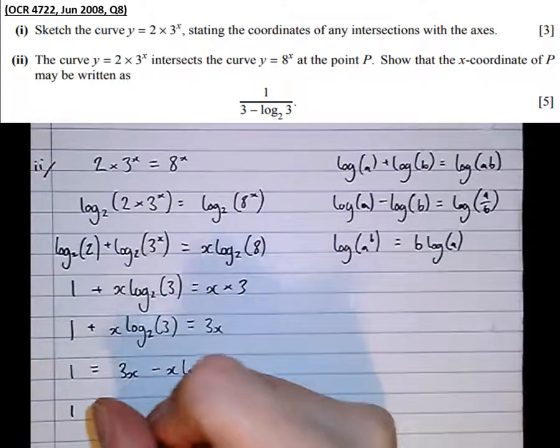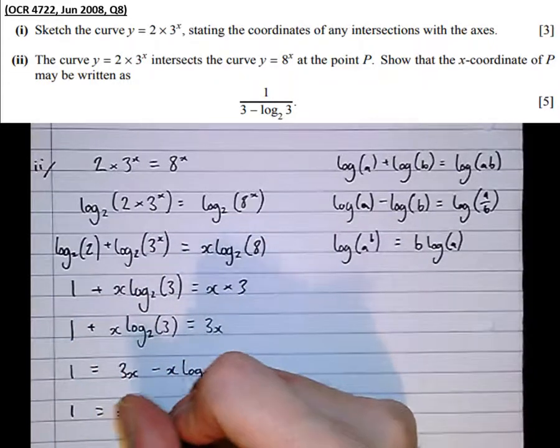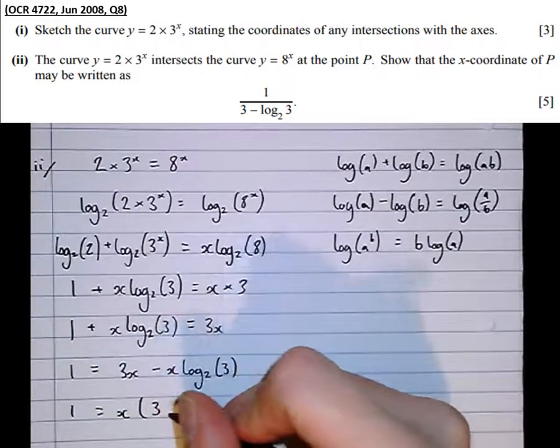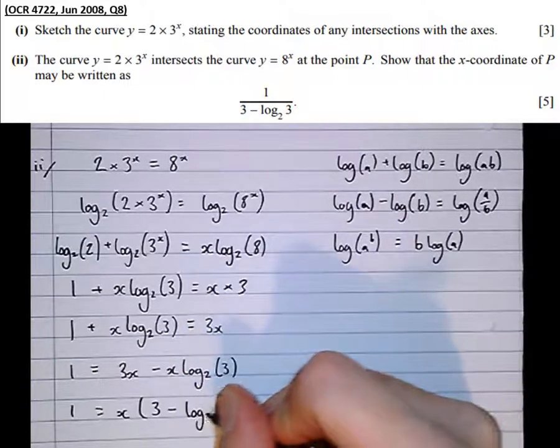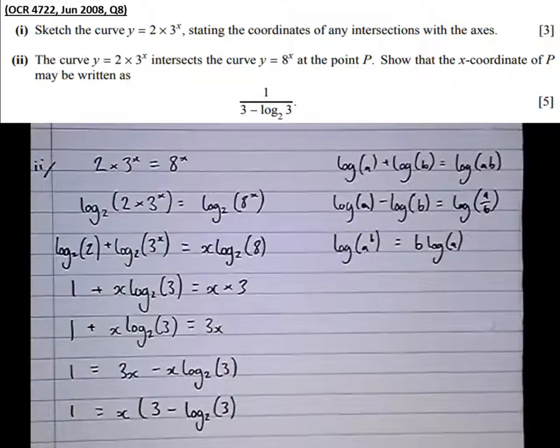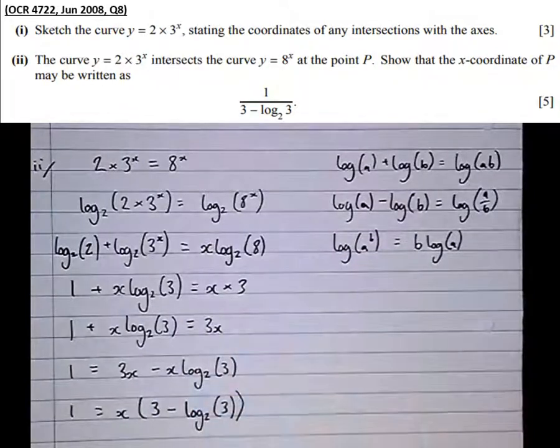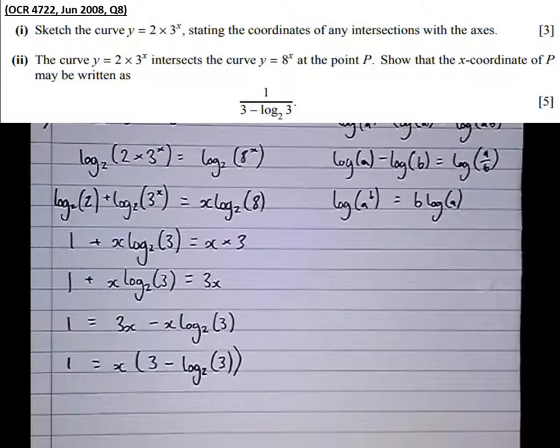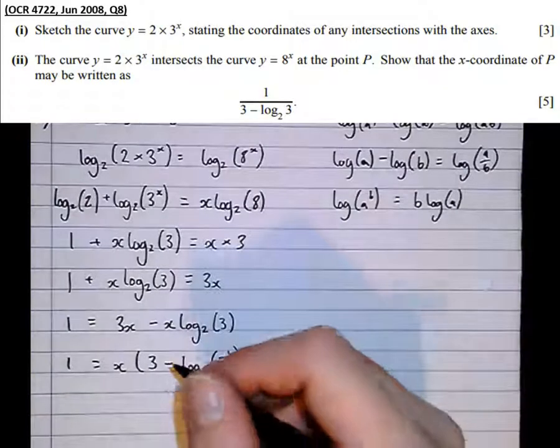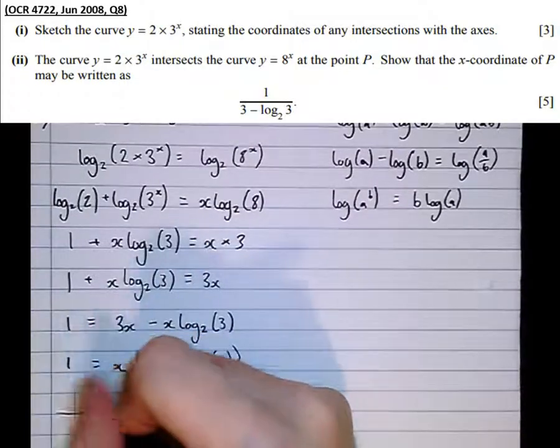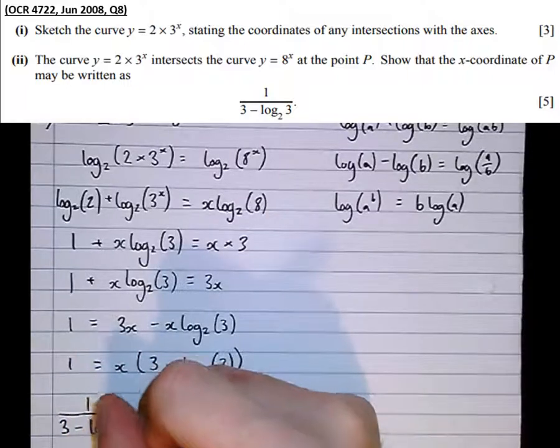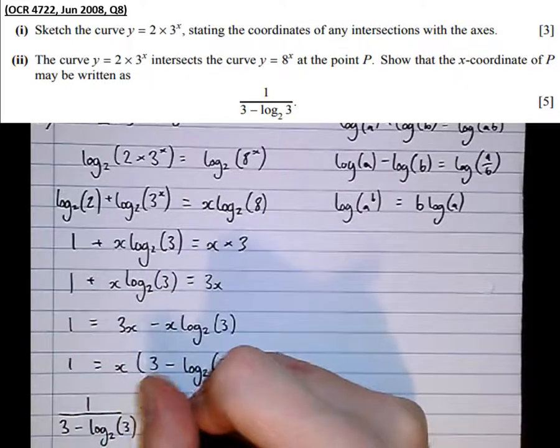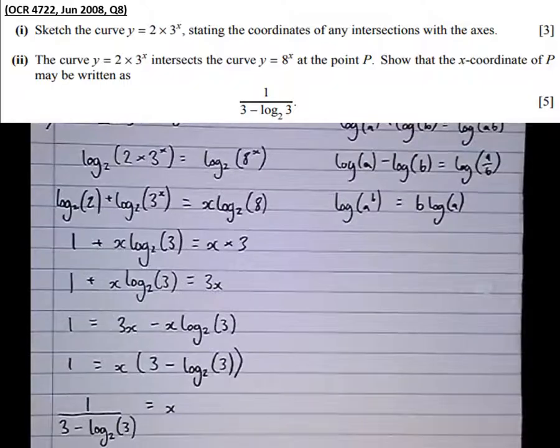Factorizing out the x: 1 equals x times 3 minus log to the base 2 of 3. Then finally divide by 3 minus log to the base 2 of 3 to get 1 over 3 minus log to the base 2 of 3 equals x, which is what we're asked to show.